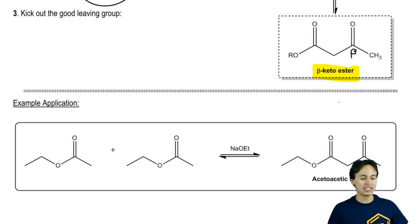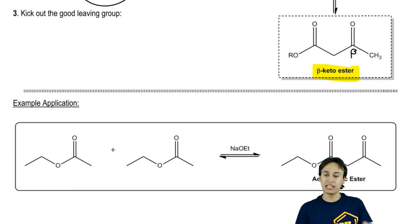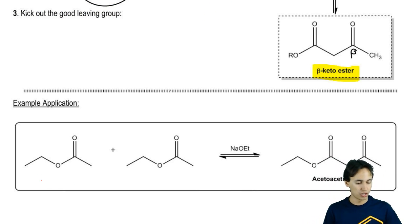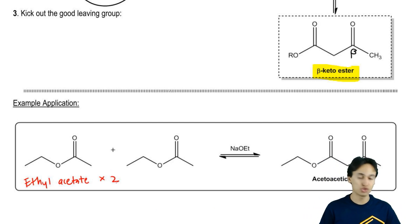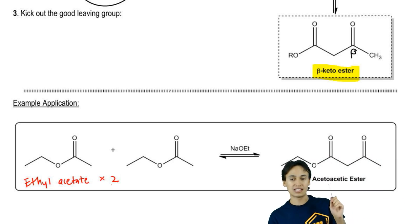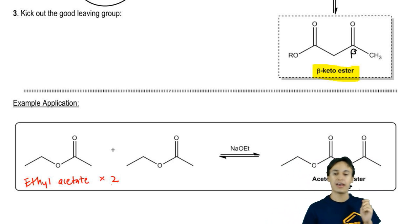I just want to show you an example application. It turns out that if you do a Claisen condensation on two molecules of ethyl acetate. Ethyl acetate is the way you name that ester. If you combine ethyl acetate times two in a condensation reaction, what you actually get is called acetoacetic ester.